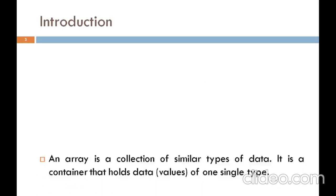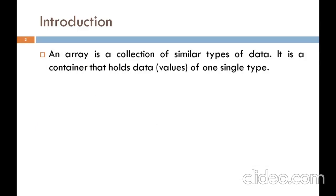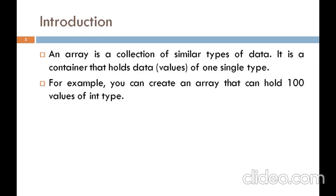First we discuss what is an array. An array is a collection of similar type of data. It is a container that holds data of one single type. For example, we can create an array that holds a hundred values of integer type. A Java array is an object which contains elements of similar data type. Additionally, the elements of an array are stored in a contiguous memory location.